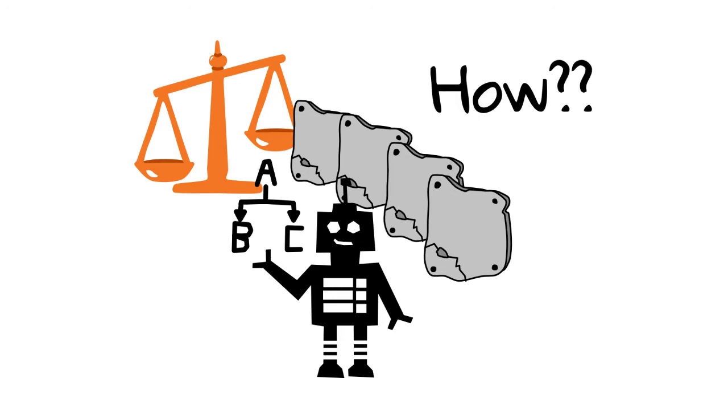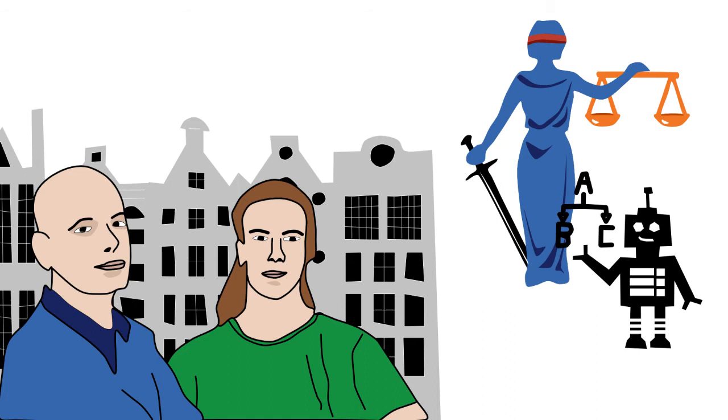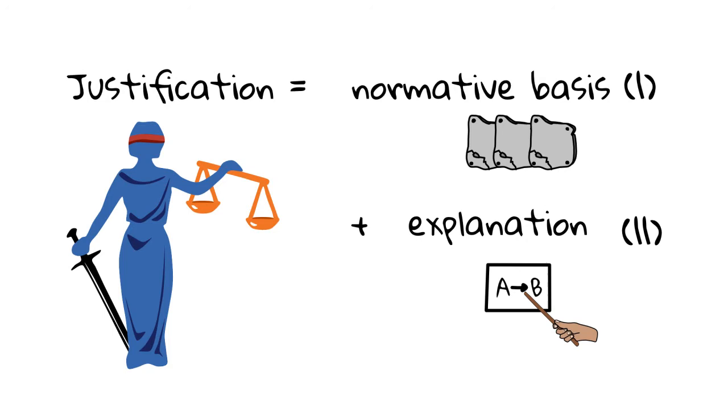I will talk you through one example based on an ongoing research project by Artur Broxell and Ulle Endres at the University of Amsterdam. The researchers are developing a method to automatically find a justification for an outcome of an election using AI. A justification, as they define it, is a normative basis plus an explanation.